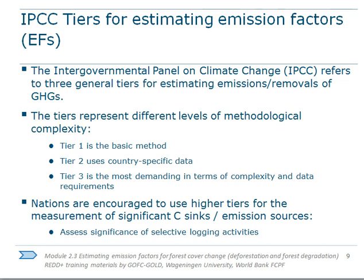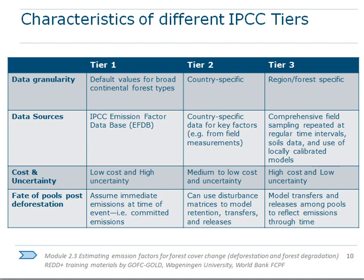The IPCC provides the general structure and concepts to estimate emission factors. Emission factors can be estimated at three levels of complexity, or tiers. At Tier 1, default regional data are sufficient; Tier 2 requires national data; and Tier 3 requires repeated measurements or specific models. The IPCC suggests using higher tiers — Tier 2 or Tier 3 — for carbon pools responsible for most emissions, while minor pools can be estimated using Tier 1 default data.